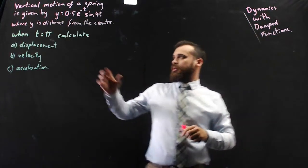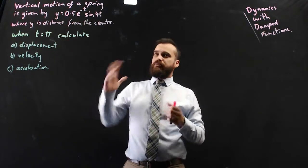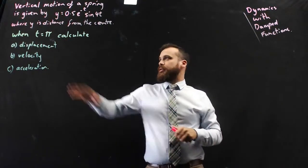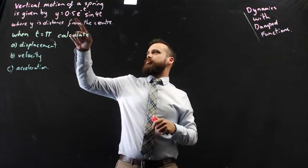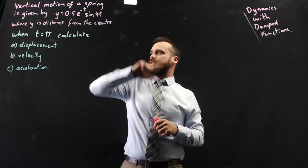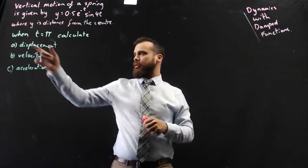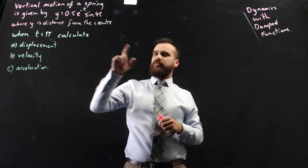So question, vertical motion of a spring, let's say like the suspension in a car, is given by y equals 0.5e to the negative t sine 4t. That's a damped function, where y is the distance from the centre.